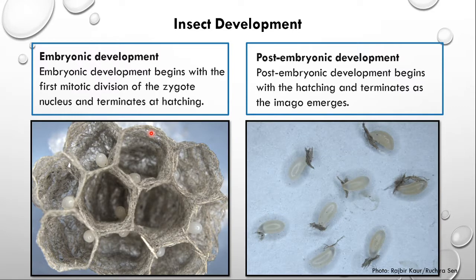Insect development can be divided into two stages. The first stage is known as the embryonic development, which begins with the first mitotic division of the zygotic nucleus and terminates at hatching. Once the egg hatches, the post-embryonic development begins and that terminates with the emergence of the adult or the imago.